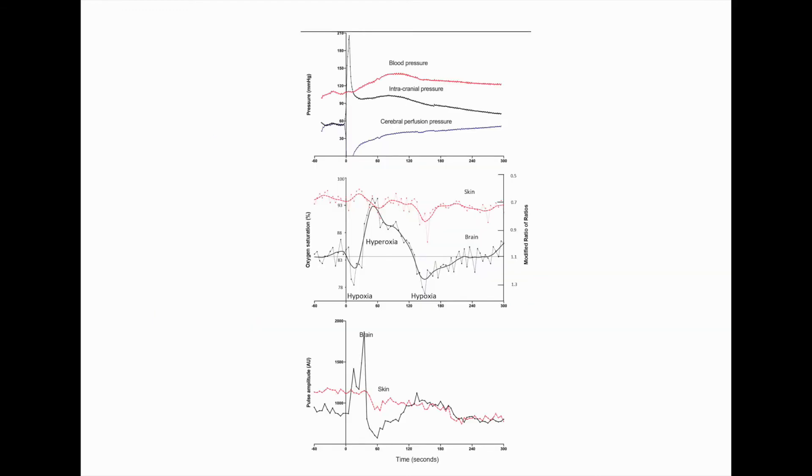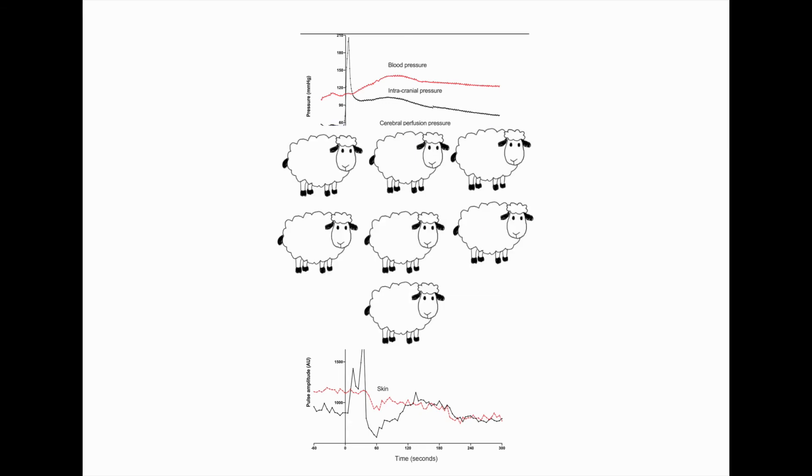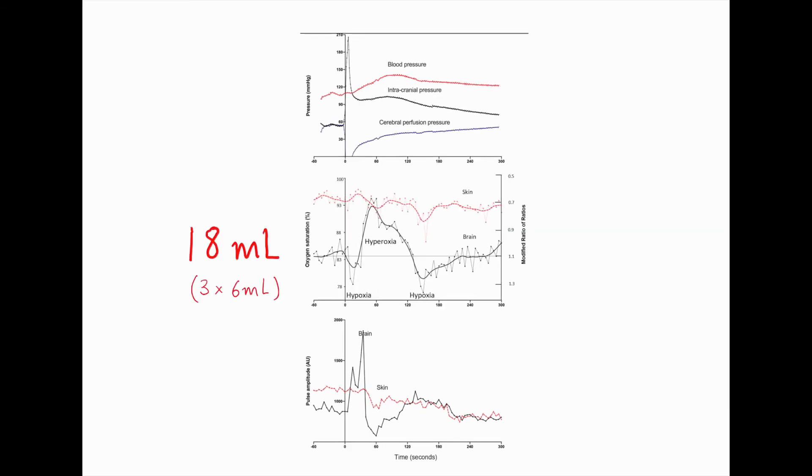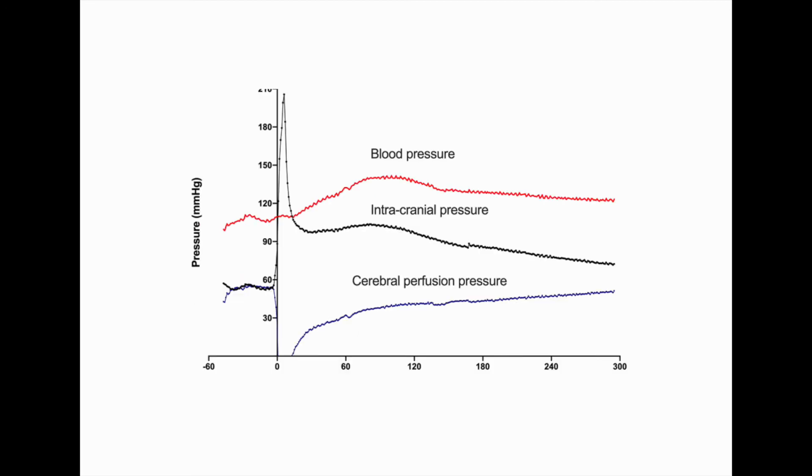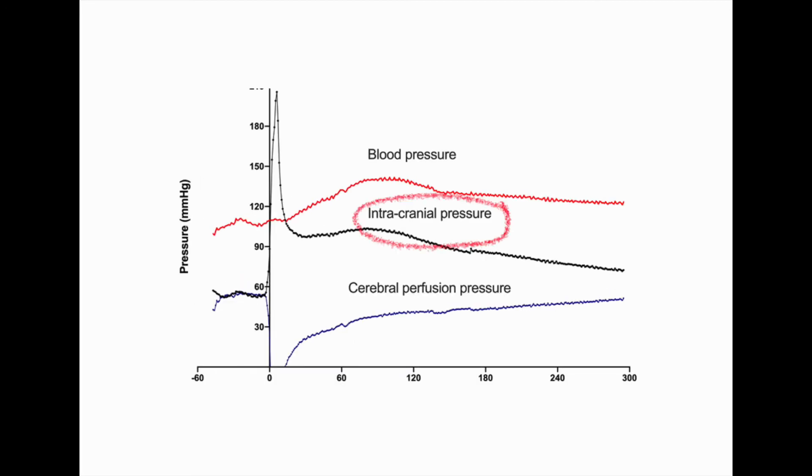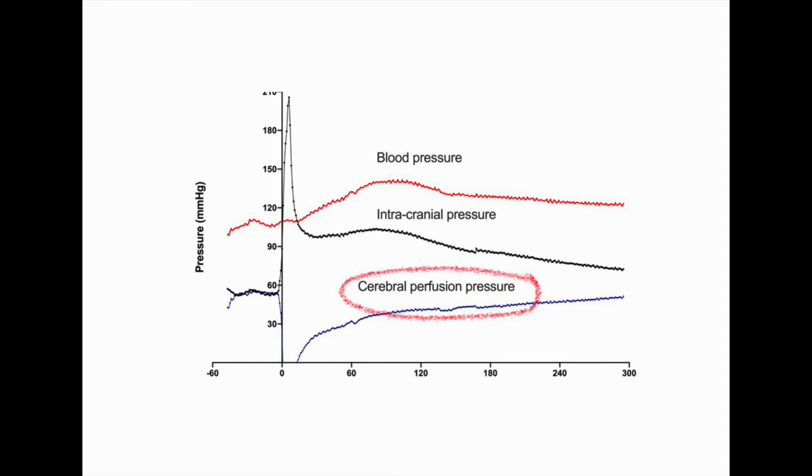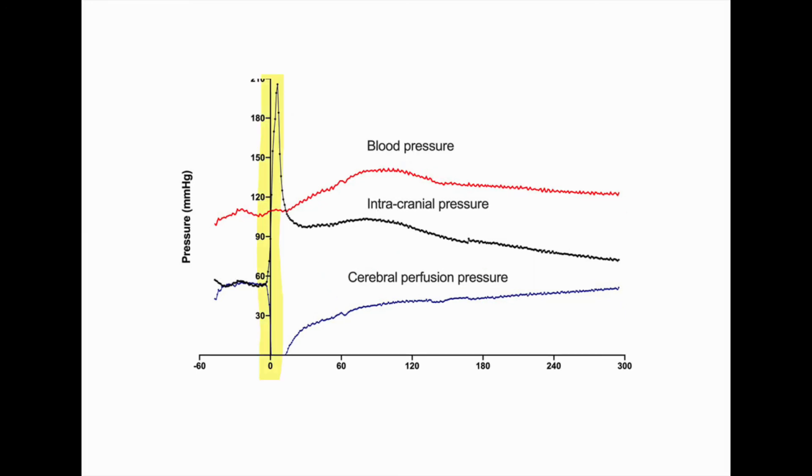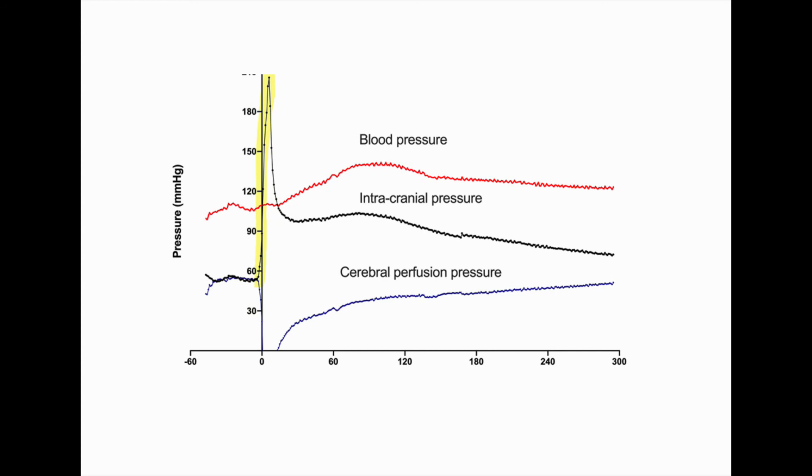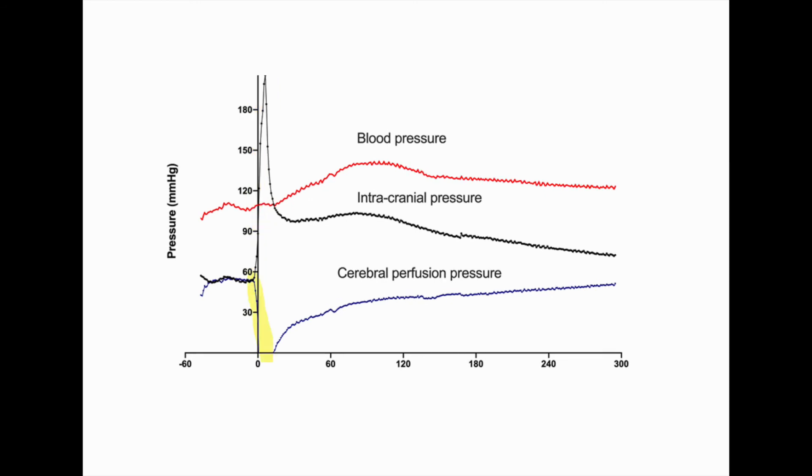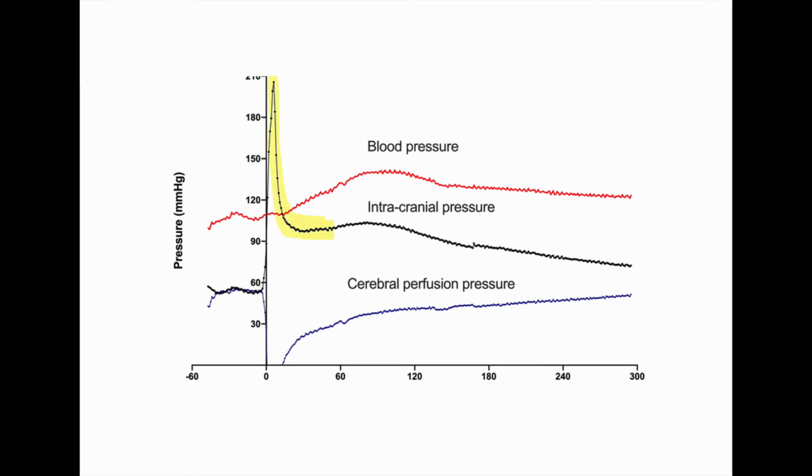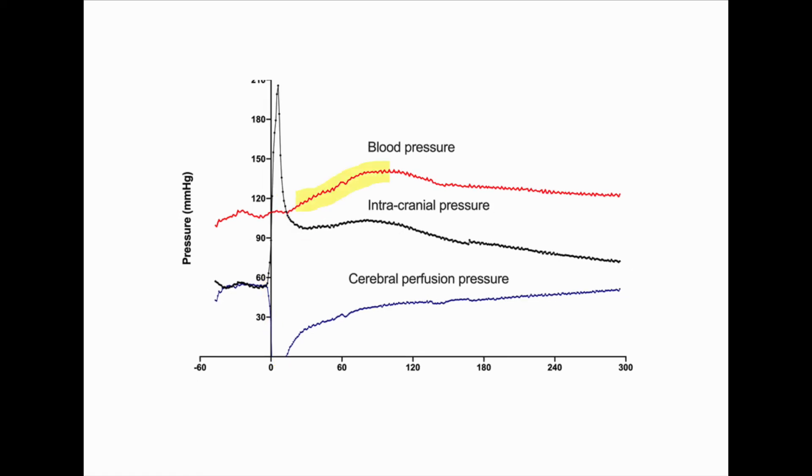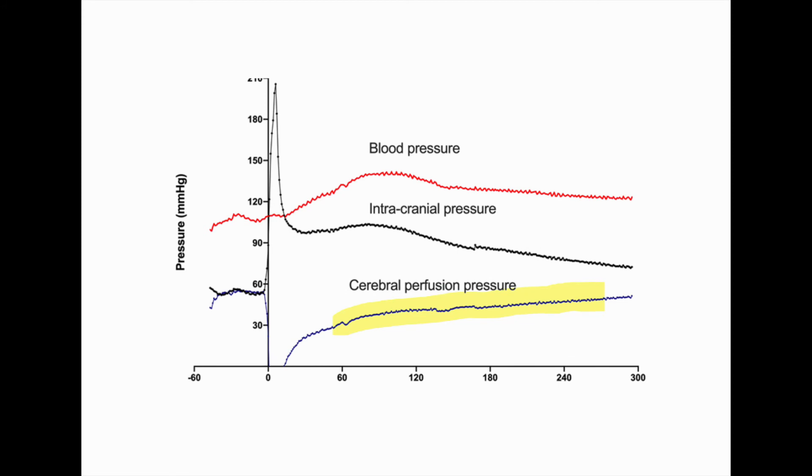This figure represents our findings when we had injected three rounds of blood. This data is the average from seven animals. By the third injection, a total of 80 ml had been injected into the brain. The upper panel demonstrates the changes in intracranial pressure, blood pressure, and cerebral perfusion pressure. The blood was injected at time zero. The ICP increased to 210 mm of mercury, and consequently, the cerebral perfusion pressure fell dramatically. By 60 seconds, the ICP fell and the blood pressure increased to restore cerebral perfusion pressure.